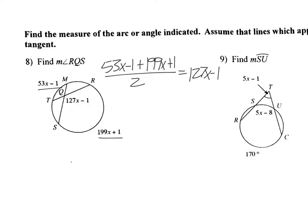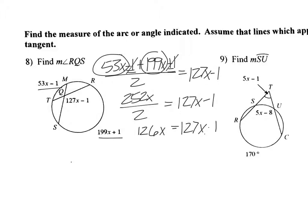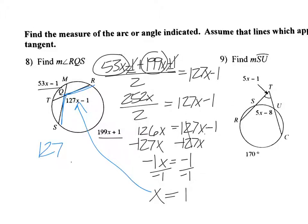Now this can get kind of ugly. But the first thing I'm going to do is I'm going to combine my x's on top. So if I do that, 53 plus 199 is 252x. So I have 252x. Then negative 1 and positive 1. Those are going to cancel. Over 2 equals 127x minus 1. Then I'm going to divide 252 by 2. That's 126x equals 127x minus 1. Get my x's on the same side. So that's negative 1x equals negative 1. Divide by negative 1. And I get x is 1. Now it says find the measure of angle RQS. This angle right here. So I've got to take 1 and plug it back into that. So 127 times 1 minus 1. And that's going to give me 126.